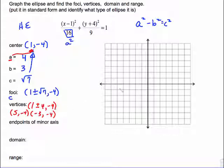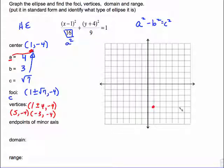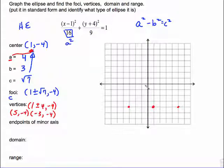I could stop right there and go to the graph. Our center is 1, negative 4. My a value is 4, so I count 4 units right and 4 units left — those are my vertices at 5, negative 4 and negative 3, negative 4. That confirms what we got using the formula. Then for b, I add and subtract 3 vertically to get the endpoints of the minor axis.